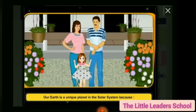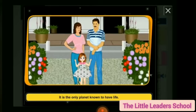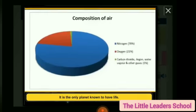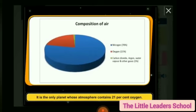Number one: it is the only planet known to have life — यह जीवन के लिए जाना जाता है, इस ग्रह पर ही जीवन संभव है. It is the only planet whose atmosphere contains 21% oxygen — यही एक ऐसा planet है, पृथ्वी एक ऐसा ग्रह है जिसके वायुमंडल में 21% oxygen पाई जाती है, कितनी — 21%.